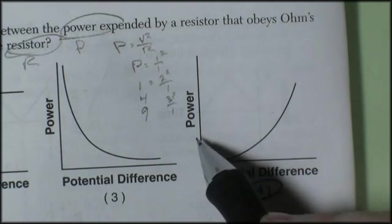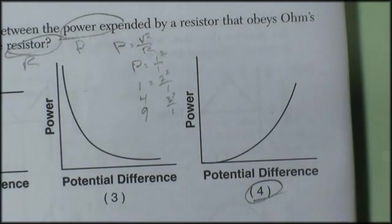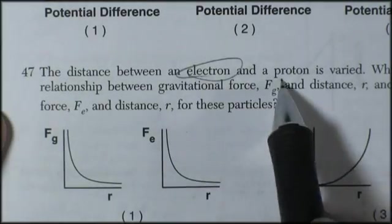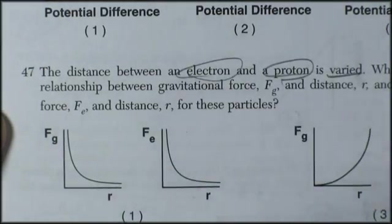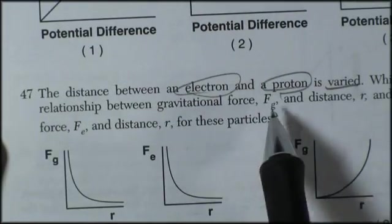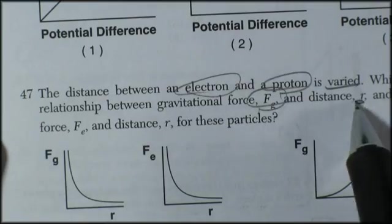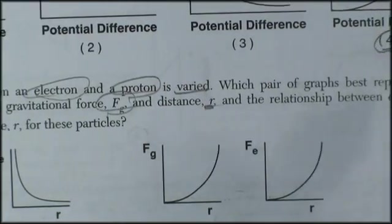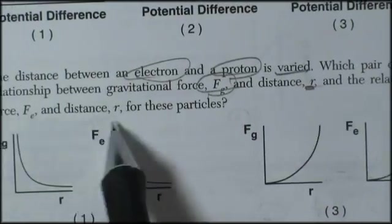Voltage increases, power increases with the square of voltage. The distance between an electron and a proton is varied. Which pair of graphs best represents the relationship between gravitational force and distance, and the relationship between electrostatic force and distance?